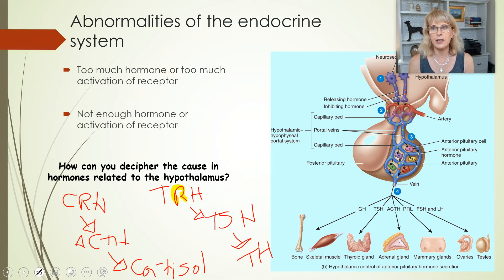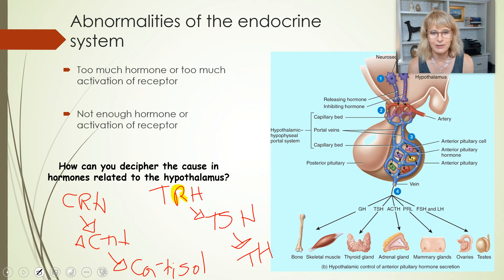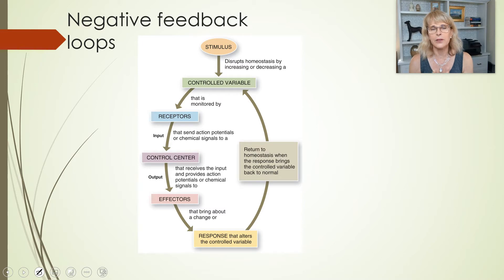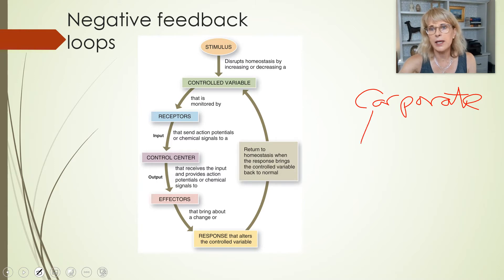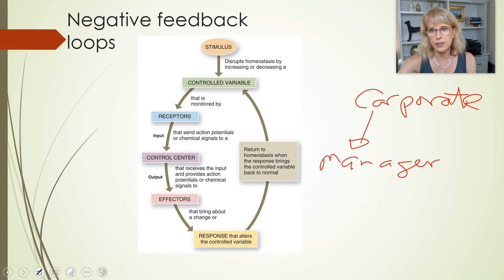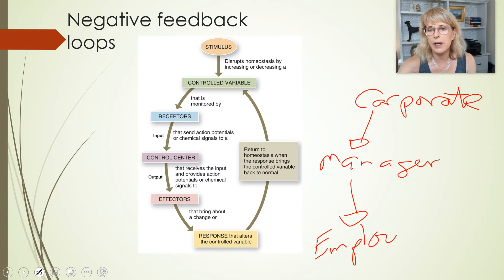These are the two stories you need to know, and we're going to think about it like we think about mocha pumpkin lattes at Starbucks. This is a negative feedback loop. If corporate does not say to sell pumpkin lattes, then the manager should not tell the employee to sell pumpkin lattes, and the employee should not sell pumpkin lattes.